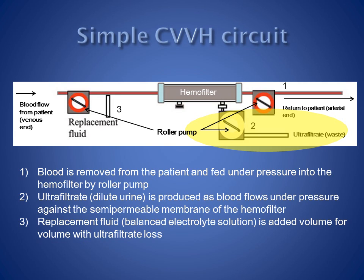Typically, one and a half to two and a half litres per hour of ultrafiltrate is produced. The ultrafiltrate is essentially dilute urine. Unlike the kidney, no reabsorption takes place, so lost water and electrolytes are replaced with a balanced electrolyte solution, an equal volume to the lost ultrafiltrate.